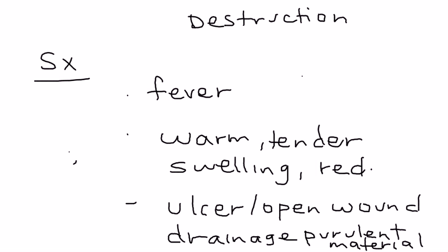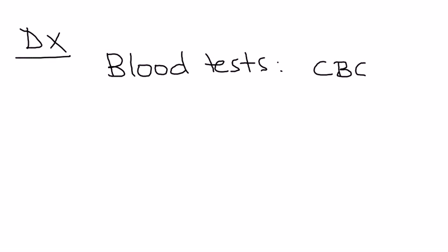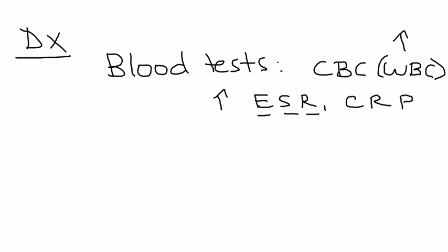The most important thing to illustrate is the workup of osteomyelitis. In a patient suspected with osteomyelitis, first do basic blood tests: CBC, looking at the white blood cell count, which will be elevated. Then order non-specific indicators of inflammation – ESR and CRP. These will be elevated, but they just tell you there's inflammation somewhere.